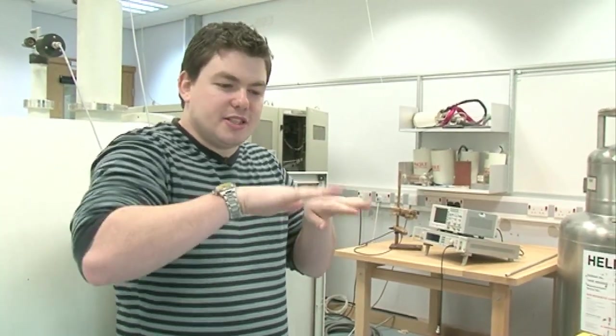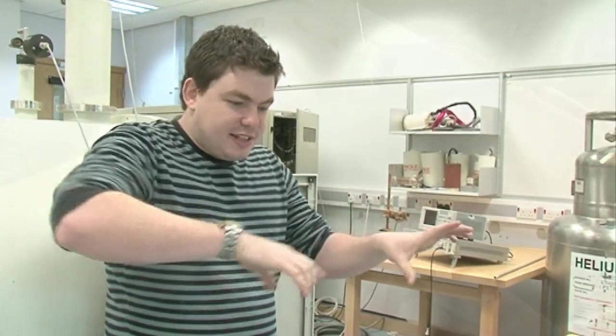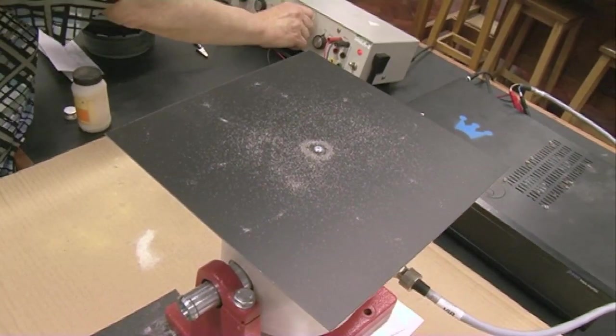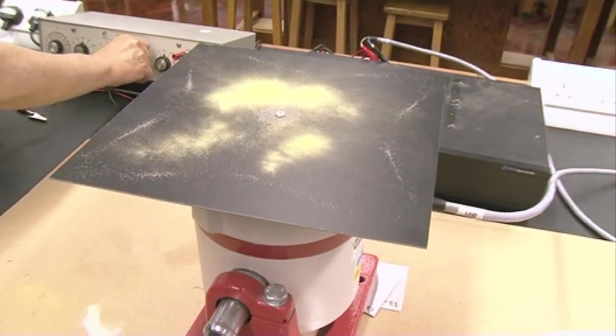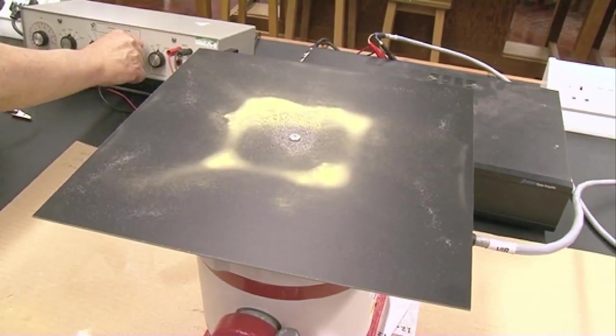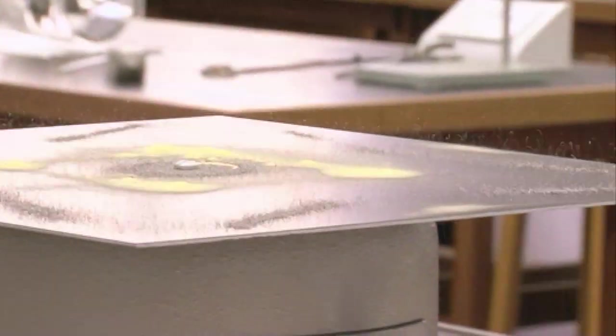When you put it on and vibrate it, depending on the frequency—how many times it goes up and down per second—you'd get these different patterns forming on the top of the tray. Lots of people had done it, there were some interesting publications already, but he really took it and ran with it almost, and really wanted to understand exactly what was going on.